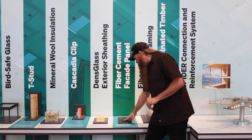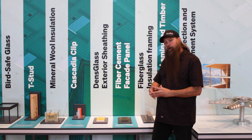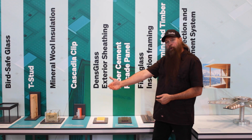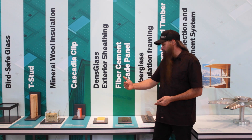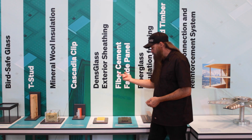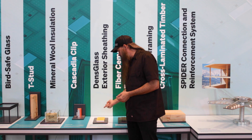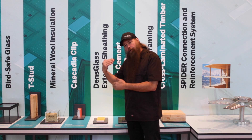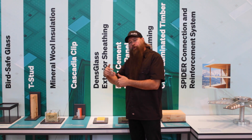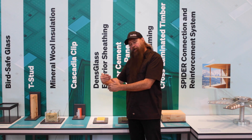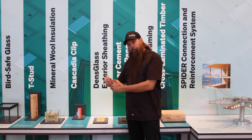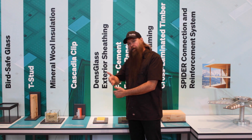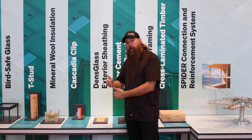You have a fiber cement panel — a little difficult to see from your angle — but this is done to create added durability to your structure. You also have a dense glass exterior sheathing, which includes WRB (water-resistive barrier) properties, so that when you add insulation elements to the exterior, this becomes your line where vapor stops.